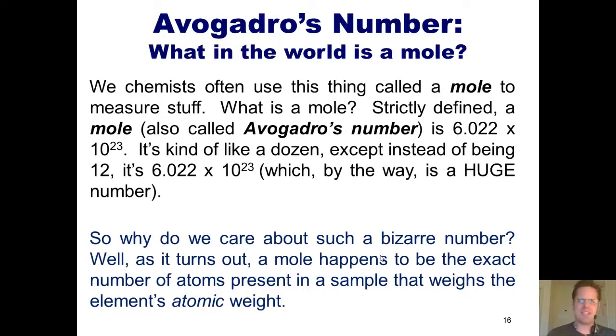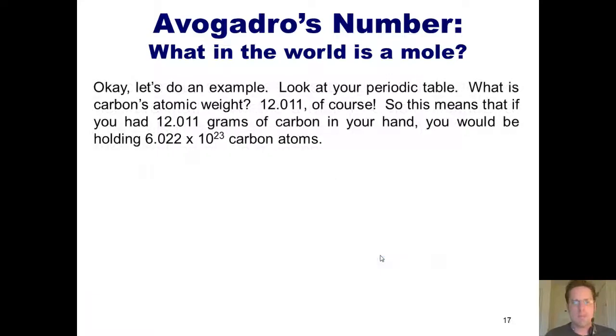So why in the world would we chemists even care about such a bizarre number? Well, oddly enough, as it turns out, a mole happens to be the exact number of atoms present in a sample that weighs that element's atomic weight. Let me do an example. Look at your periodic table. What is carbon's atomic weight? It's 12.011, of course. So if you had 12.011 grams of carbon in your hand, you would be holding 6.022 times 10 to the 23rd carbon atoms.